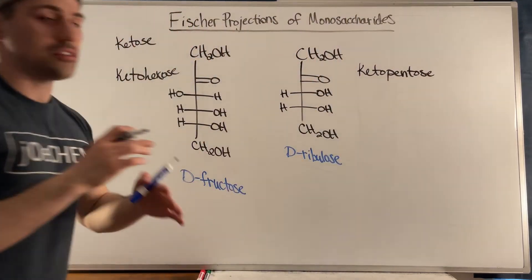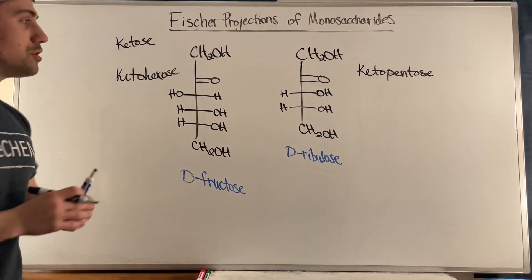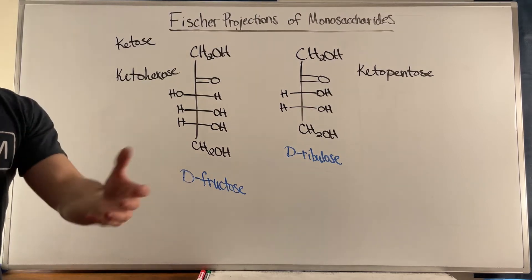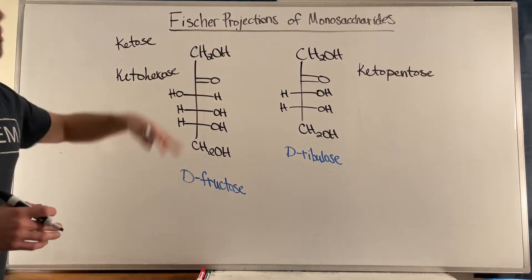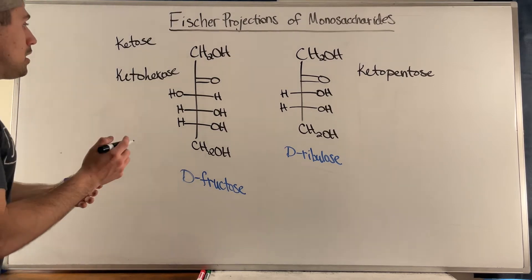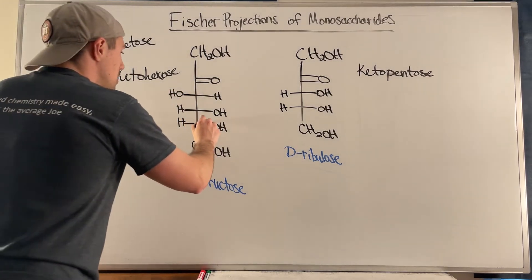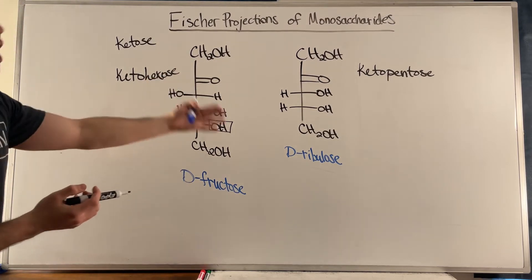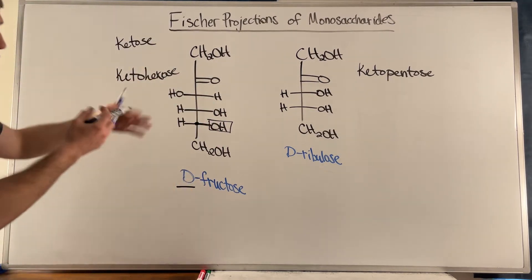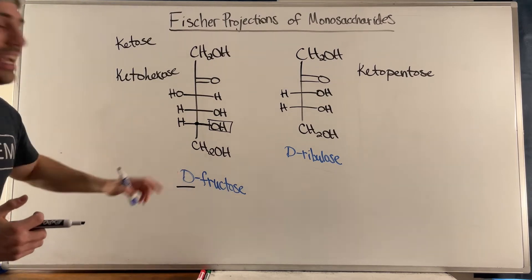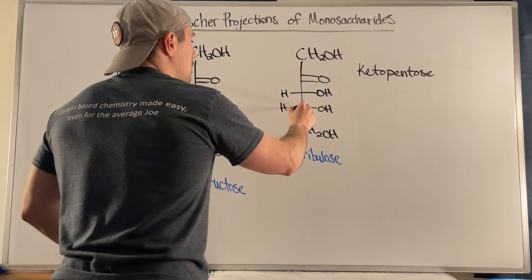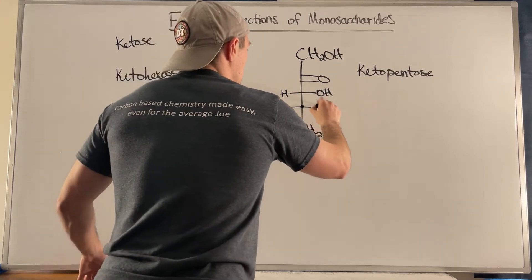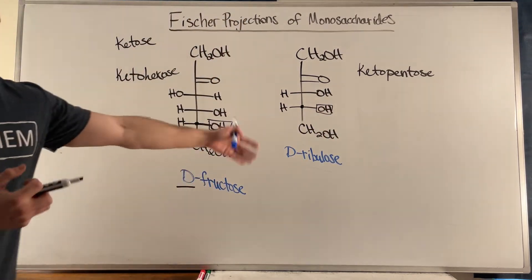A lot of the beginning terminology covered the bulk of what you need. The same D and L rules apply to ketoses. Without knowing the sugar's name, you zoom in on the stereocenter farthest away from the ketone, look at the positioning of the OH — if it's on the right, it's a D-sugar. So this one is D-fructose. And over here with ribulose, the OH is also on the right-hand side, making it D-ribulose.